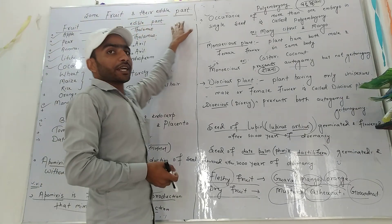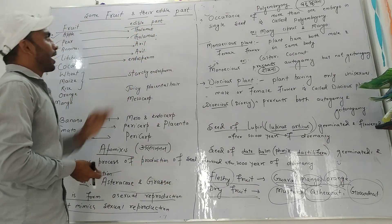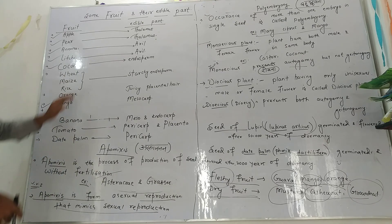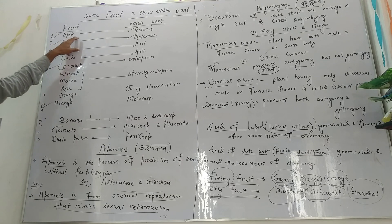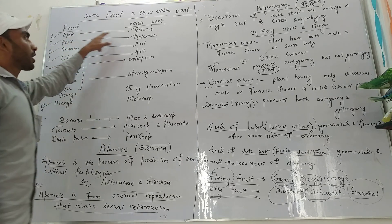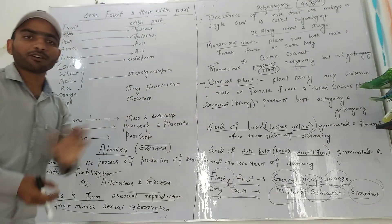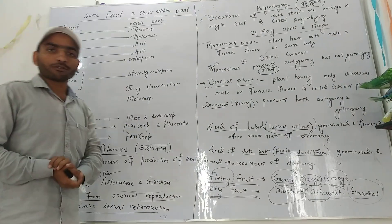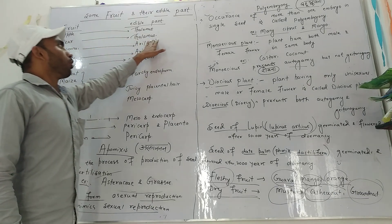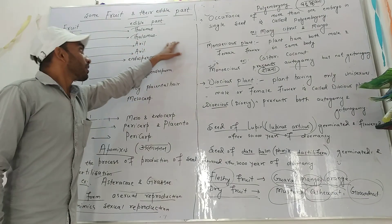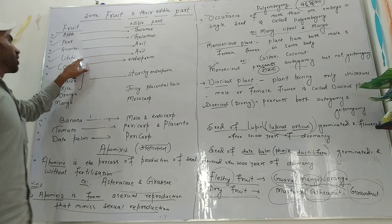Some fruits and their edible parts. For example, apple — which is the edible part? Thalamus. Apple's thalamus is the false fruit. This is also the endosperm — lychee.